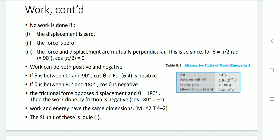The frictional force opposes displacement, so θ = 180°, giving work done by friction as negative (cos180° = −1). Work and energy both have the same dimension ML²T⁻² and the unit is Joule. From the table, different units of work or energy are: 1 Erg = 10⁻⁷ J, 1 Electron-volt = 1.6×10⁻¹⁹ J, 1 Calorie = 4.186 J, and 1 Kilowatt-hour = 3.6×10⁶ J.